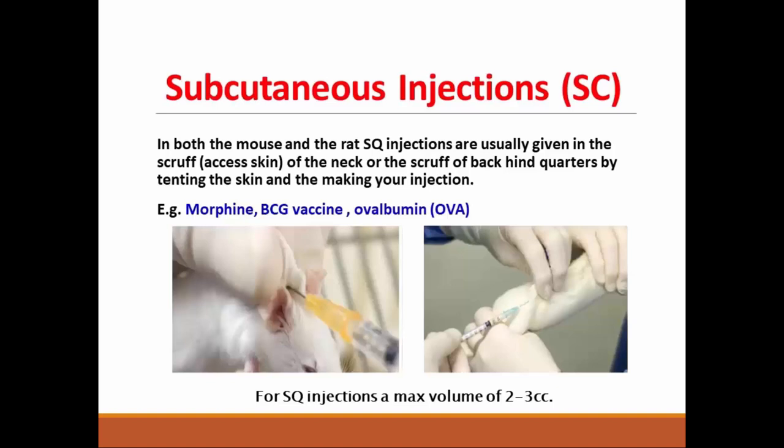Subcutaneous injection. In subcutaneous injection of any substance, either in mouse or rat, the injection is given in the scruff of the neck or scruff of the back, or the hindquarters, by tenting the skin and making your injection. The maximum volume in subcutaneous injection ranges from 2 to 3 ml in rats.